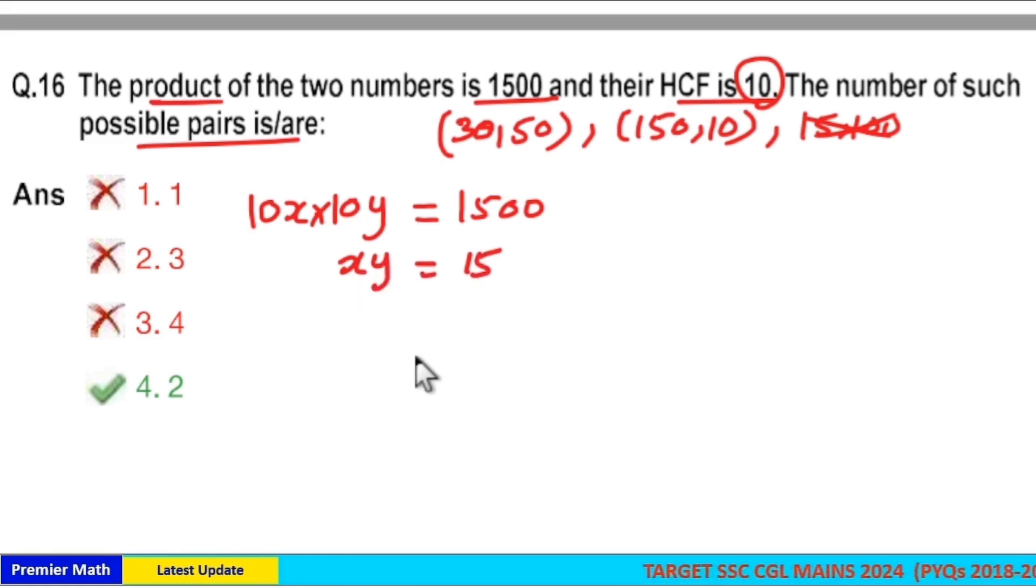Now, write x and y as coprime numbers. Coprime means HCF should be 1. Highest common factor should be 1.